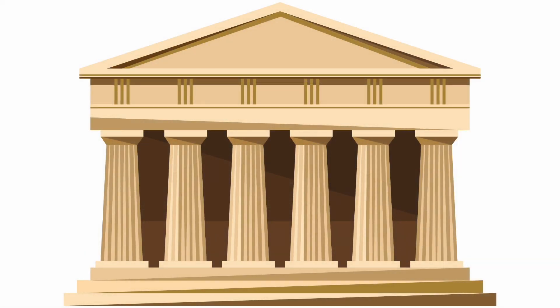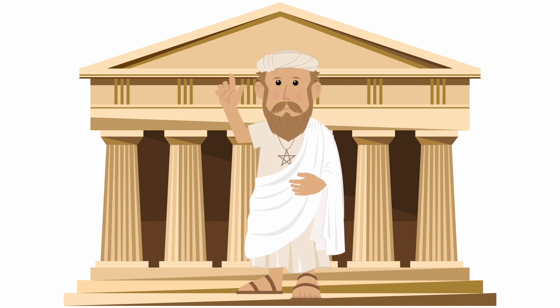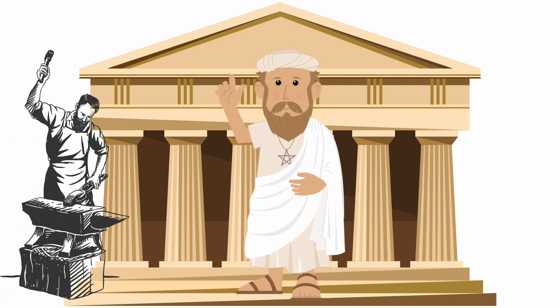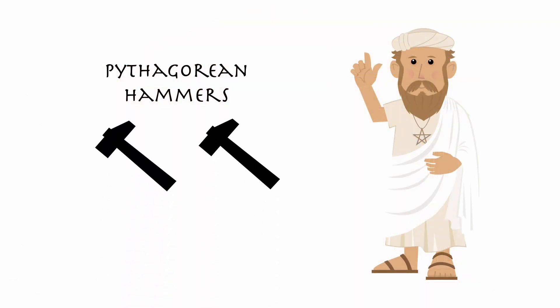It all goes back to why we developed equal temperament in the first place. Both western music and Turkish music based their understanding of pitch on the findings of the ancient Greek philosopher Pythagoras. As legend has it, one day Pythagoras was walking and heard blacksmiths hammering metal. He noticed that when two hammers were struck simultaneously, some of them produced harmonious sounds while others produced dissonant sounds. Upon further examination, he realized that the hammer that was twice as small as another, when struck, produced a musical pitch that was exactly the same but one octave higher.